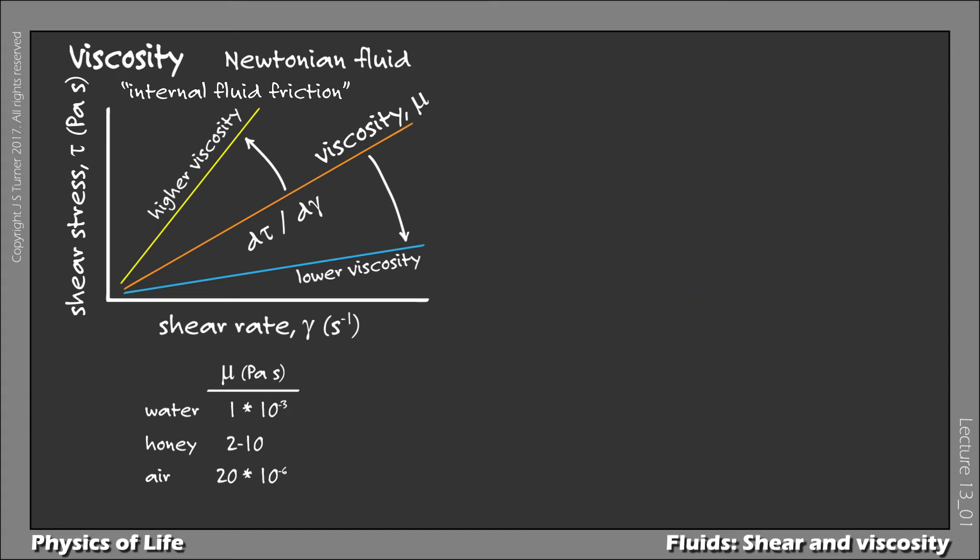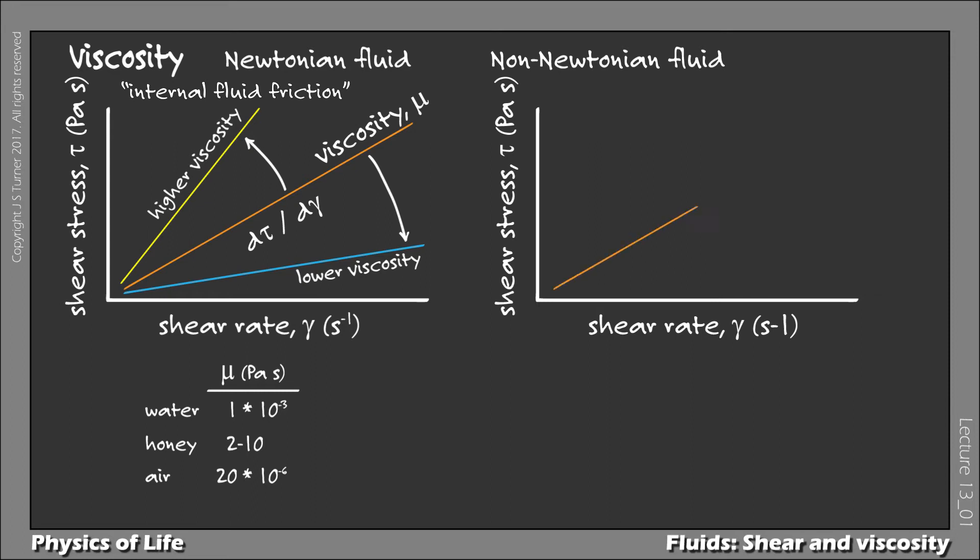Similarly, fluids can be non-Newtonian, and they are signified in the same way, that is, with the shear stress-shear rate curve. As a point of reference, a Newtonian fluid is one in which the slope of the shear stress-shear rate curve is linear. That is to say, the viscosity is constant over all shear rates.